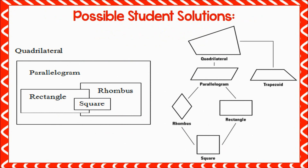As students sort the figures, ask them to consider the attributes that allow a figure to be classified into a category and to compare the criteria to the given shape. It is important for students to see that when you re-sort the quadrilaterals into new subcategories, they still belong to the previous category. For example, although a square is classified as a rectangle, it also belongs to the parallelogram category, as well as the quadrilateral category.